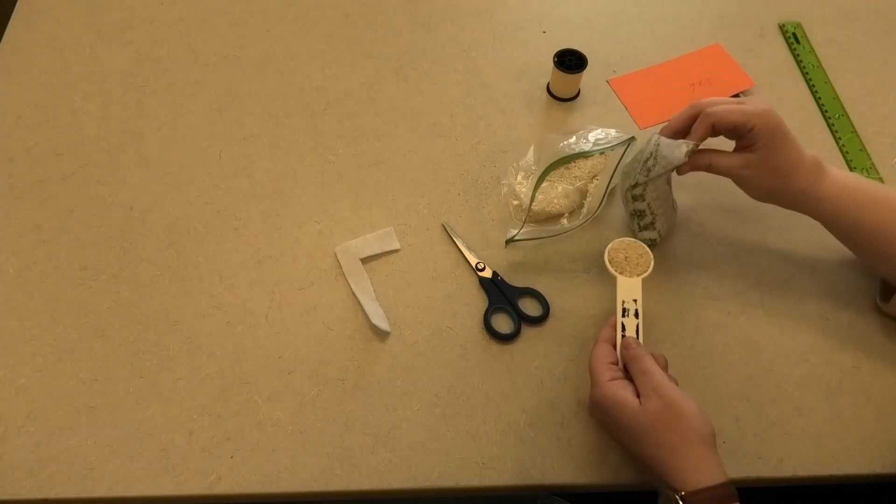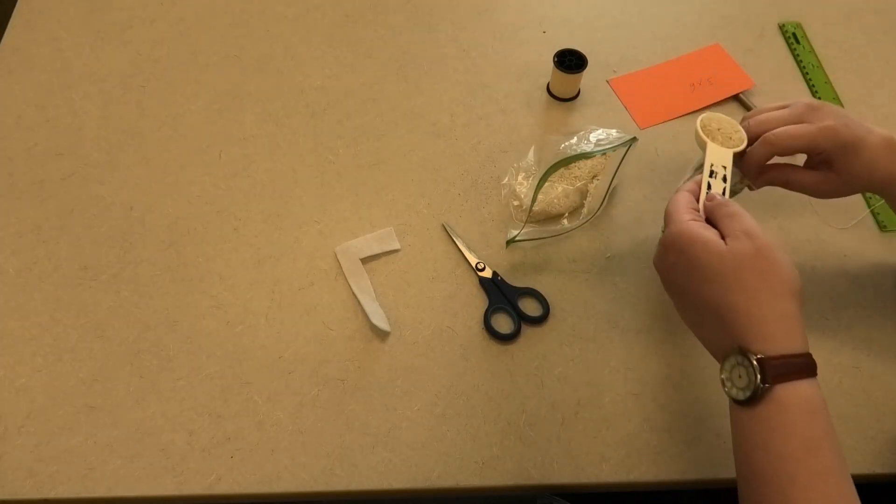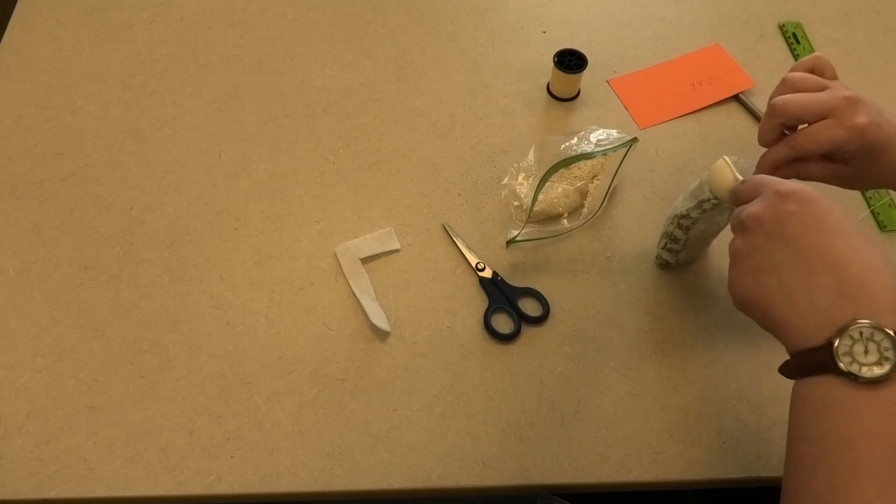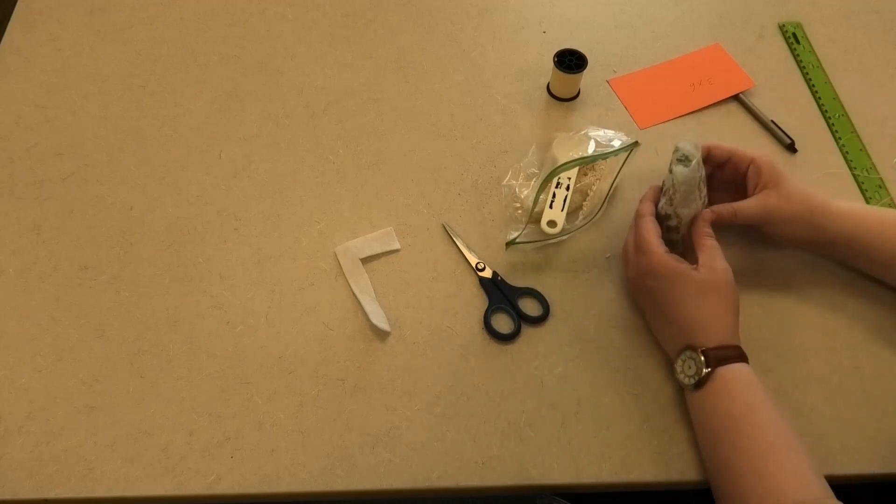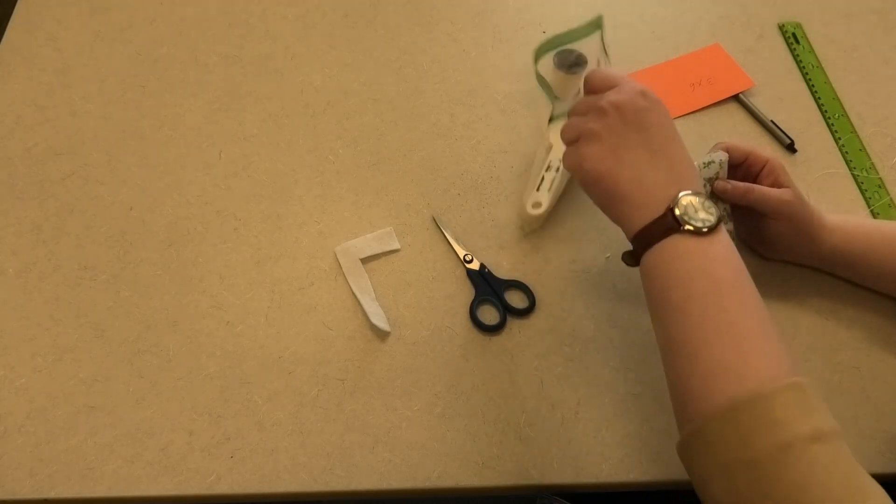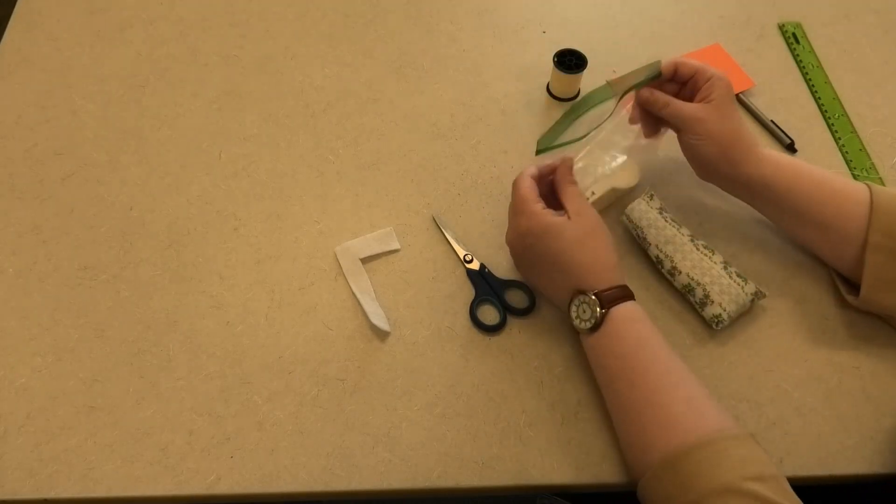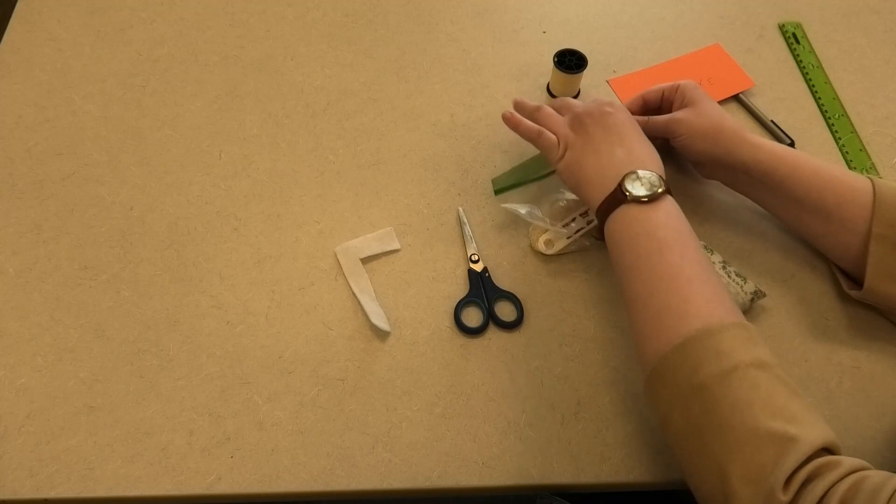So I'm not going to fill this all the way so the rice still has room to move inside. I'm just going to give it about three quarters of the way full. So I put in about five to six tablespoons of uncooked rice. I'm just going to return the measuring spoon to the container and seal it up.